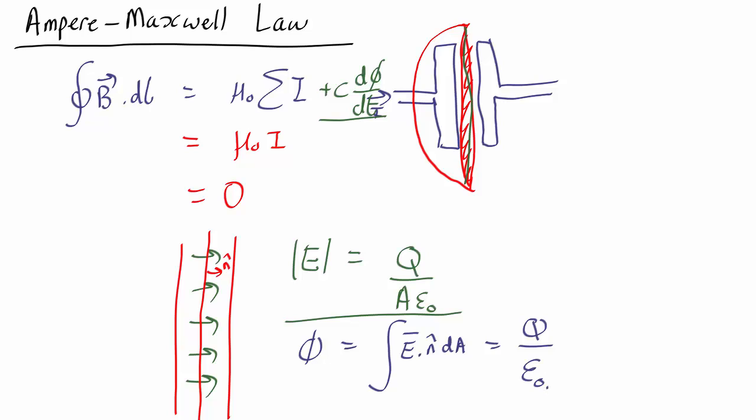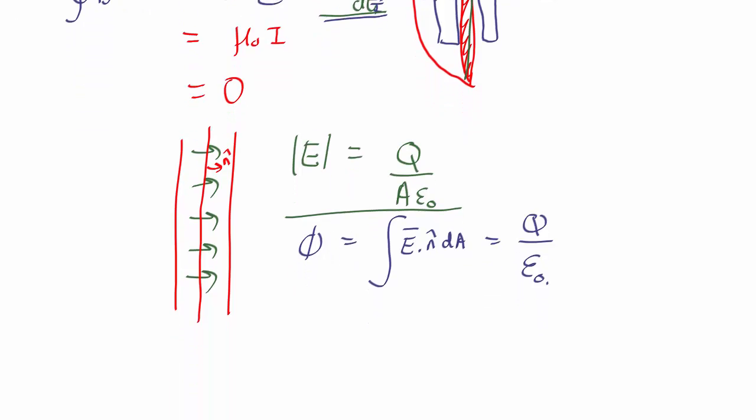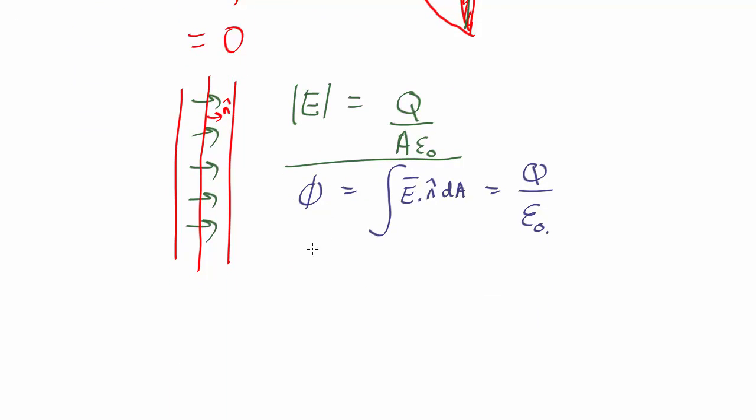What we really want is a d phi by dt term, so what is the rate of change of this? We think it's going to be rate of change of this because that's going to be analogous to Faraday's law. So d phi by dt is going to be one over epsilon naught dq by dt, the rate of change of the charge on the capacitor, but that is just the current. Current is the rate of change of charge, so it's just i over epsilon naught.